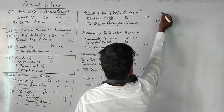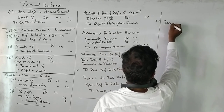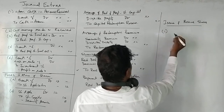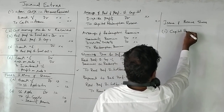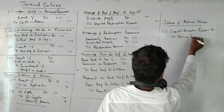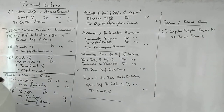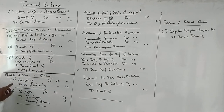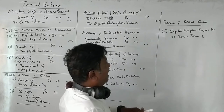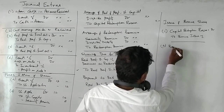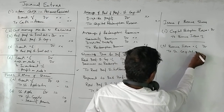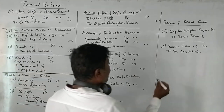For the journal entry for issue of bonus shares: the first entry is capital redemption reserve account debit to bonus issue account — meaning we are using capital redemption reserve for payment of bonus issue. The last entry is bonus issue account debit to share capital account. These are the journal entries for bonus share issue.